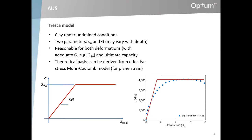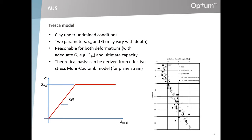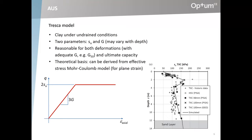It's a fairly crude model, but depending on how exactly you choose the stiffness, it may actually be made to fit typical lab data fairly well. SU very often varies with depth — a linear distribution is shown here, for example from the Cowden site from the PISA project. We have a crust with higher strength near the ground surface, then a decrease in strength at some depth, then a more gentle increase of strength with depth.